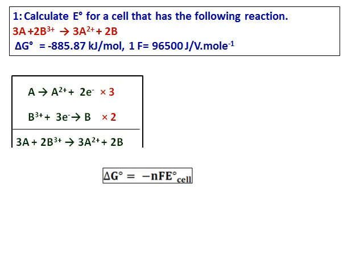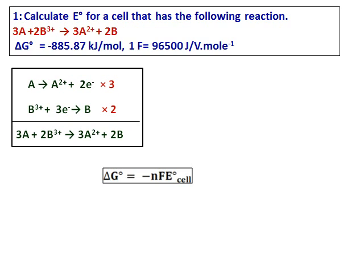So to get n, let's separate the equations into two half equations. A gets oxidized to A²⁺ and B³⁺ gets reduced to B. To balance the electrons, multiply the first equation by 3, the second equation by 2. So the number of electrons that gets exchanged is equal to 6.